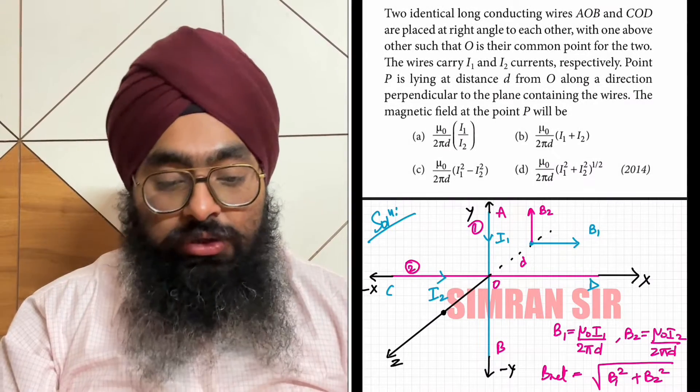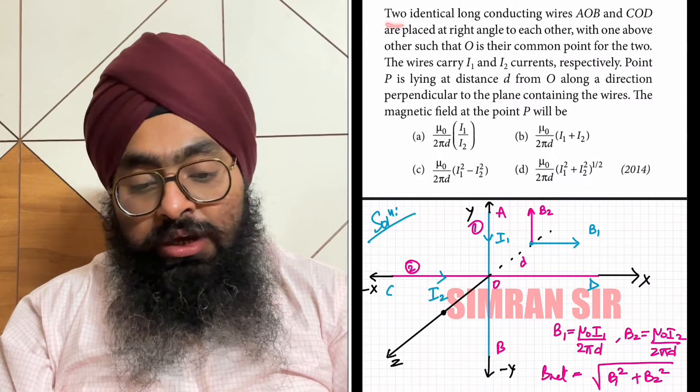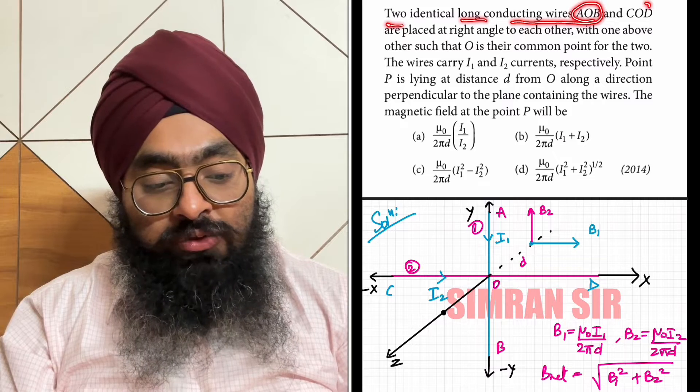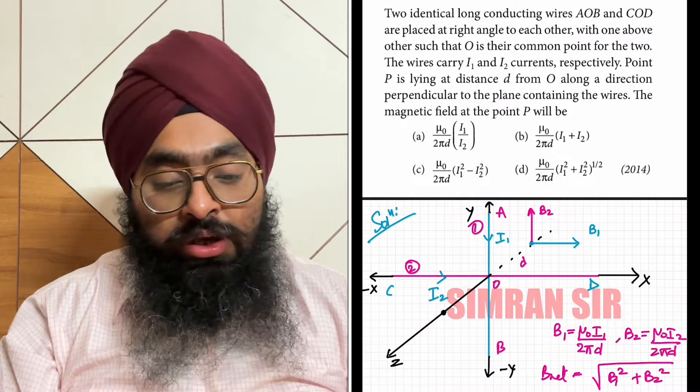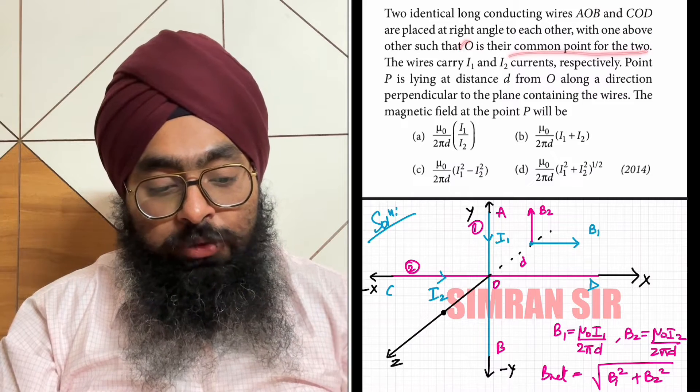So hello dear students, let us start with this question. Two identical long conducting wires AOB and COD are placed at right angles to each other, with one above the other such that O is their common point.